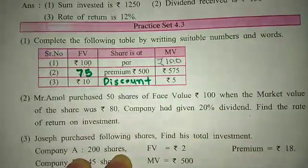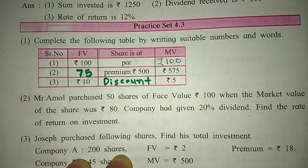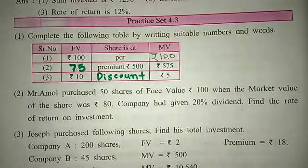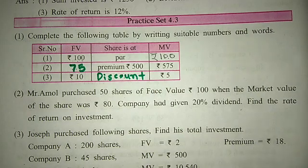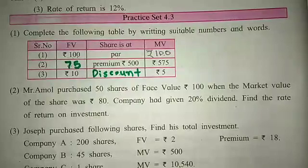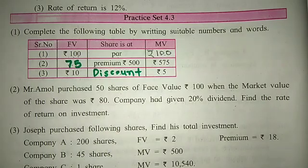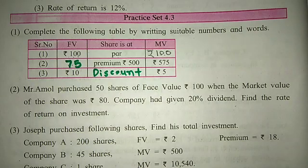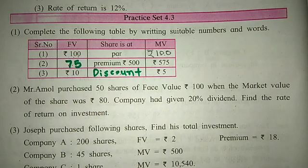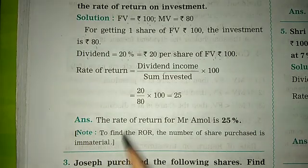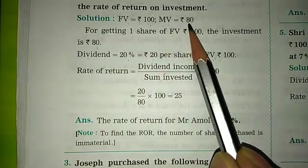Practice Set 4.3, Question 2: Mr. Amol purchased 50 shares of face value Rs. 100 when the market value of the share was Rs. 80. The company had given a 20% dividend. We have to find the rate of return on investment.